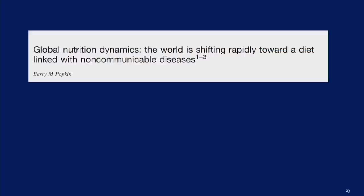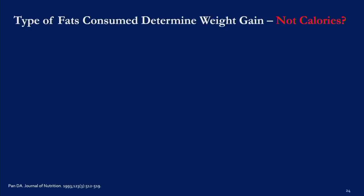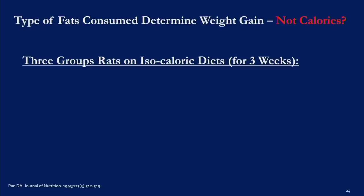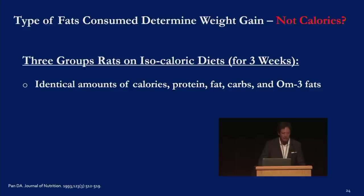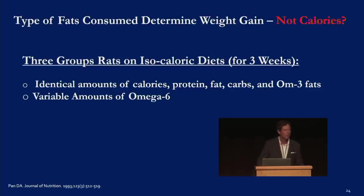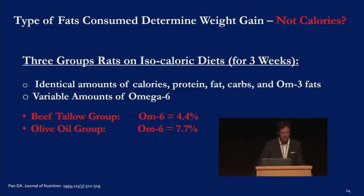Barry Popkin's paper states the world is shifting rapidly towards a diet linked with non-communicable disease — absolutely true, and the question is why. To address obesity first: in a 1993 study, three groups of rats were put on isocaloric diets for three weeks. They got identical amounts of calories, protein, fat, carbs, and omega-3 fats. The only variable was omega-6. The beef tallow group had 4.4% omega-6, the olive oil group 7.7%, and the safflower oil group 36.6%.